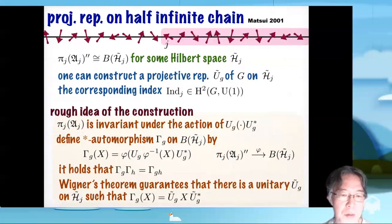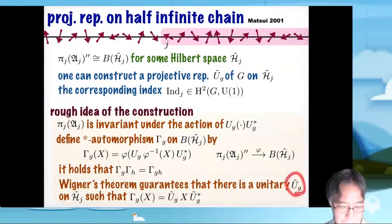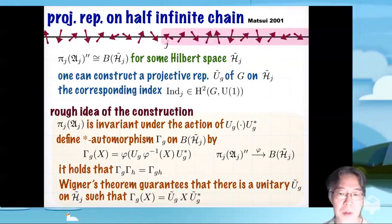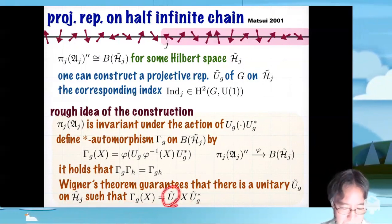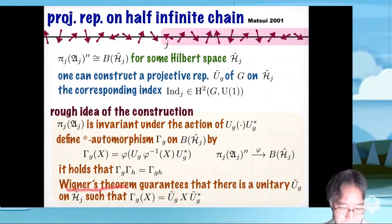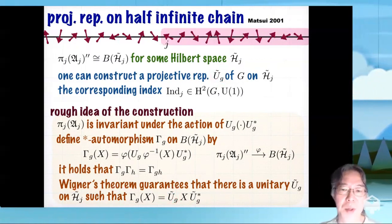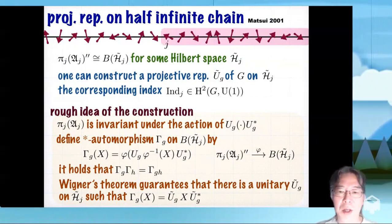Then by using something called Wigner's theorem, we know that there are unitary operators Ũₐ on ℋ̃ such that this star automorphism is recovered in this standard form. And this ũ tilde, whose existence and uniqueness is guaranteed by Wigner's theorem, is the object we looked at here. So this is basically the idea.